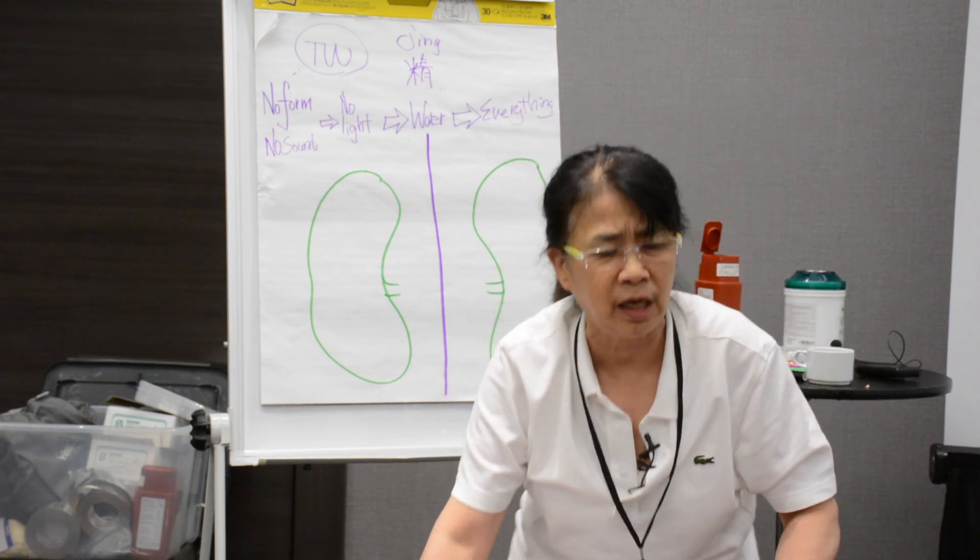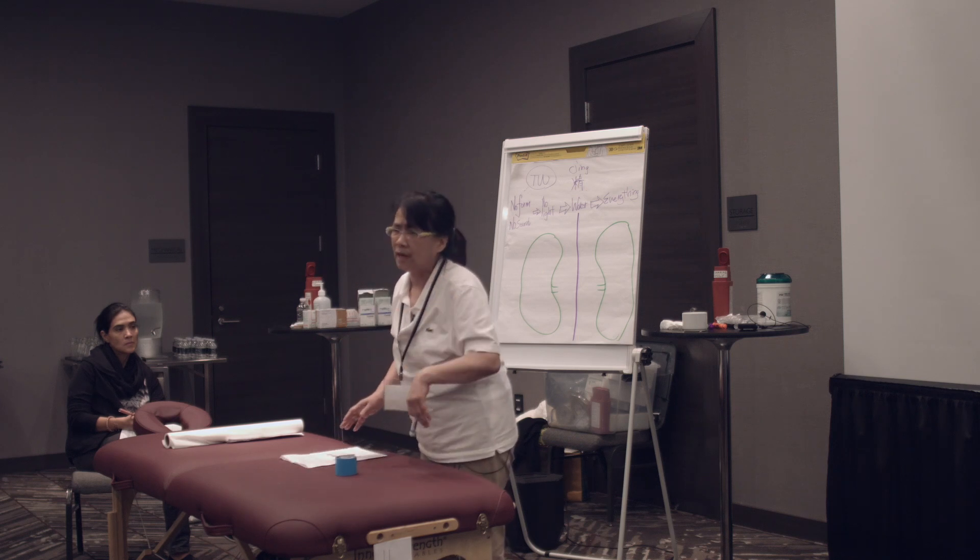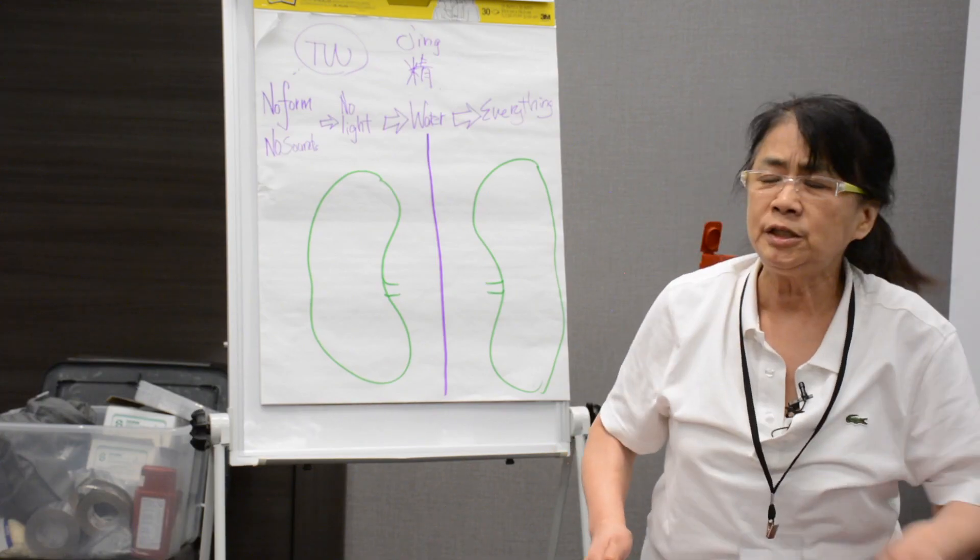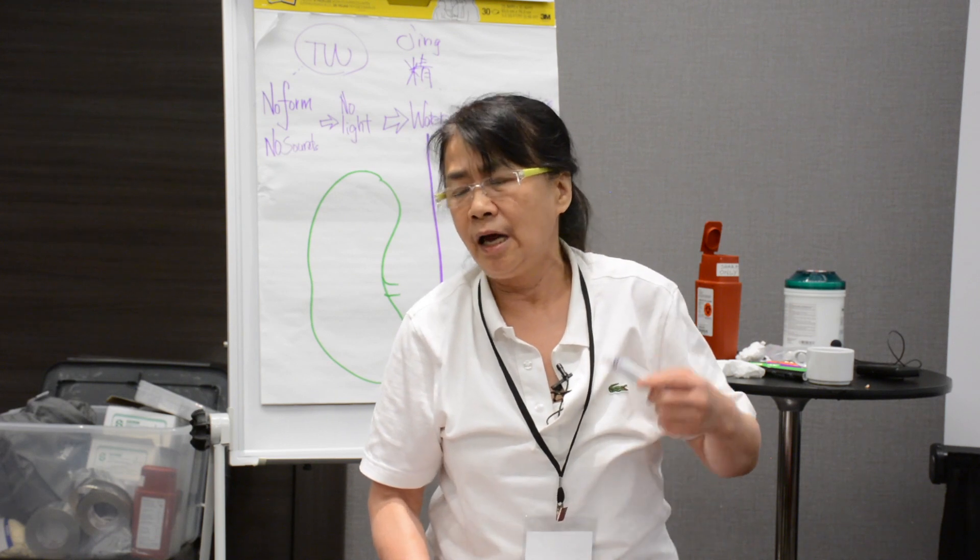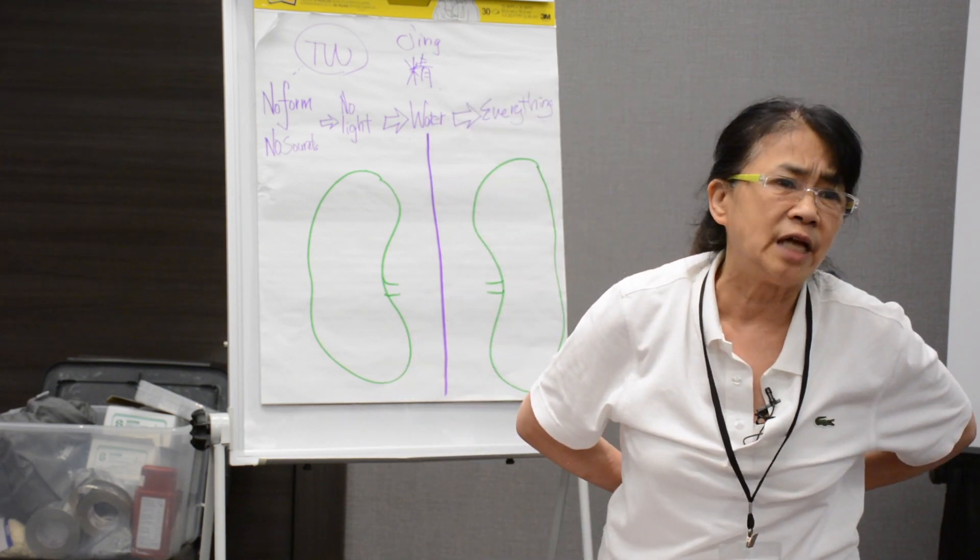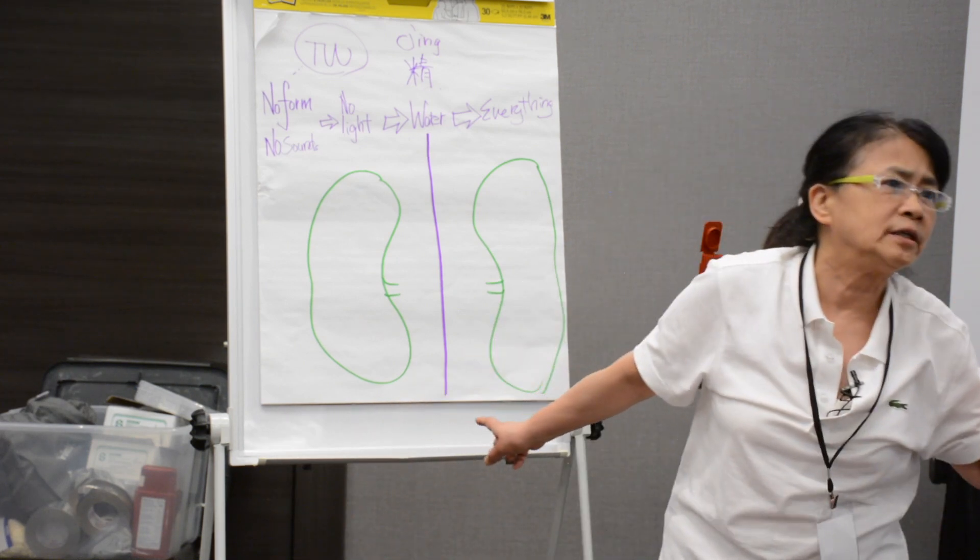And later Su-Wen said, if kidney fall down, jing is damaged, they affect it to all of the organs, which is very interesting because we learn that the kidney get failure. Once kidney die, all organ dying.